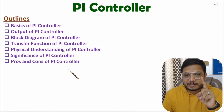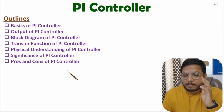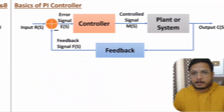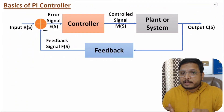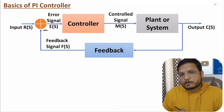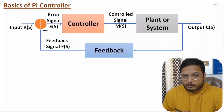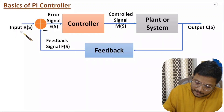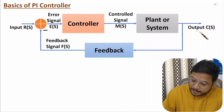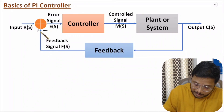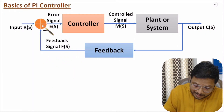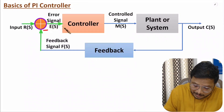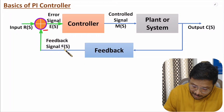Let us start with the first agenda: basics of PI controller. Here we have a standard closed-loop control system where input is R(s), output is C(s), and the feedback signal is F(s). The adder generates error signal E(s), which is R(s) minus F(s).